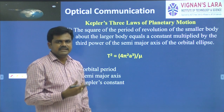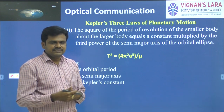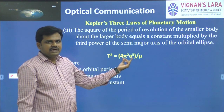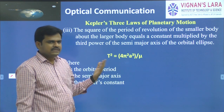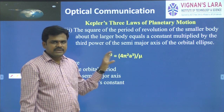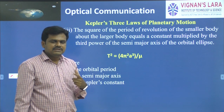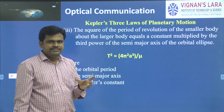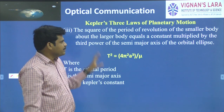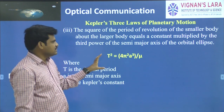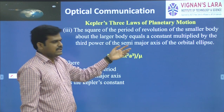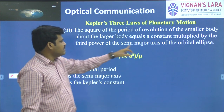Whatever we studied in the previous session — finding the orbital time period using centrifugal and centripetal forces — gives us T equal to 2π r^(3/2) / μ^(1/2). Squaring on both sides, we get T² = 4π²a³/μ. This is the third law proposed by Kepler. The square of the period of revolution of the smaller body around the larger body equals a constant multiplied by the third power of the semi-major axis.